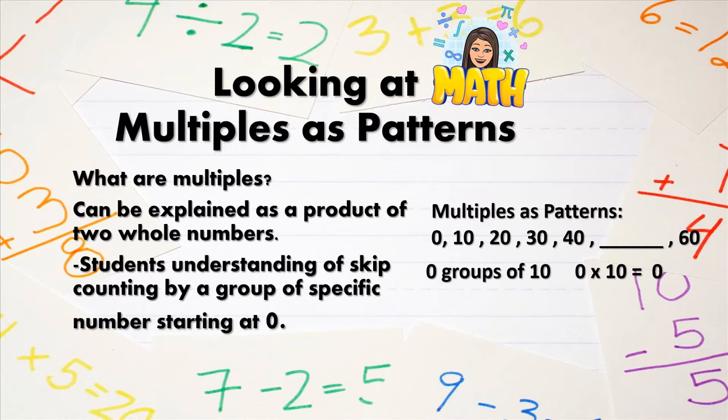Once we add a group of 10, we have 10 as our multiple. If we add another group of 10, now we have two groups of 10, which means we have 2 times 10, which as our multiple or product is 20.